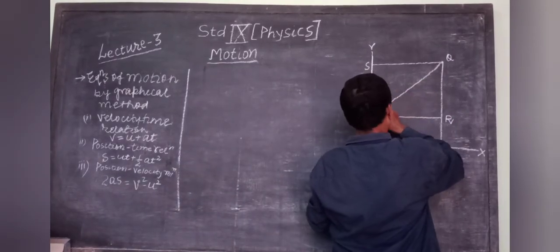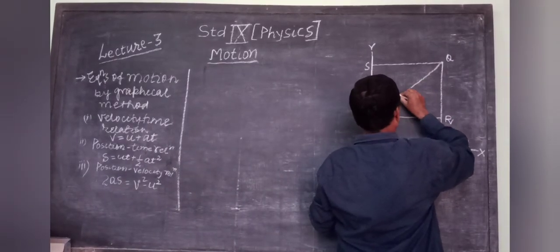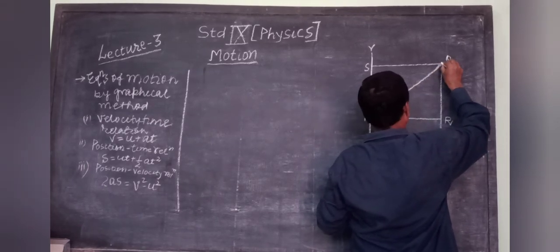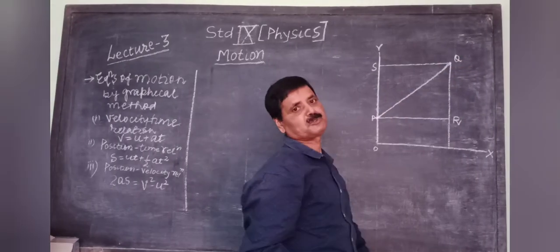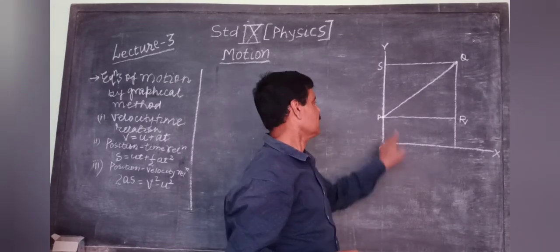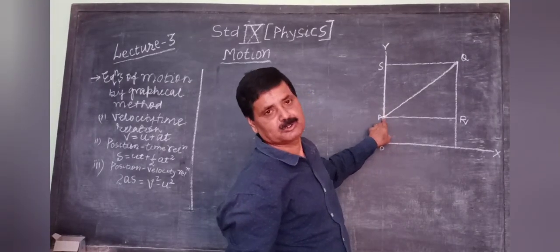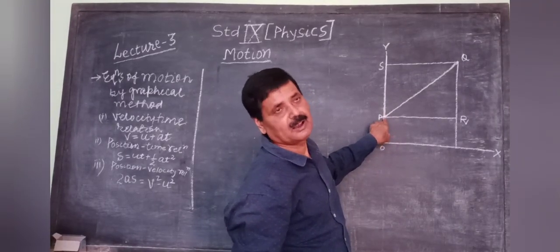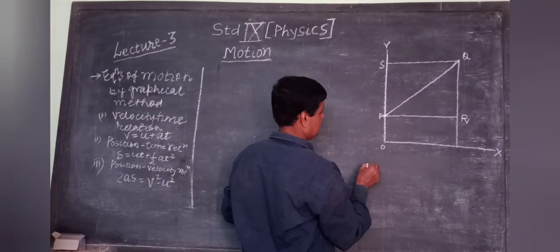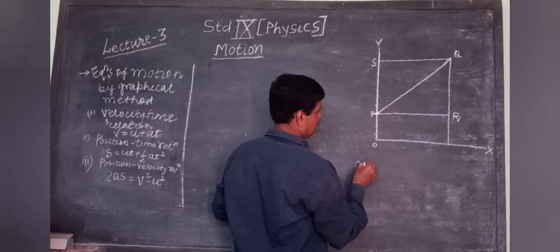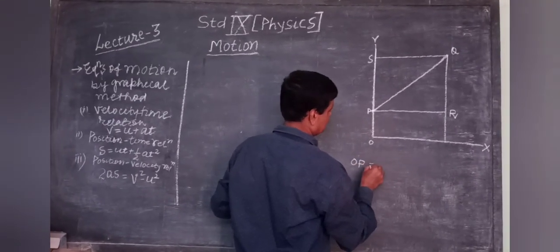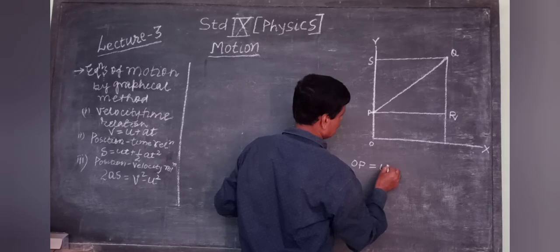The initial velocity is u here. At point P, t is equal to 0, and the initial velocity is u. At Q, its final velocity becomes v after time t. We can write OP is equal to u.